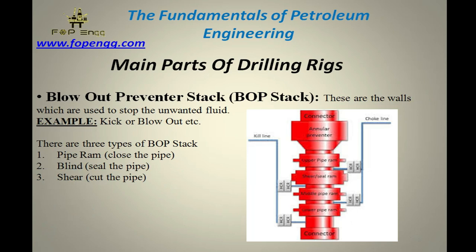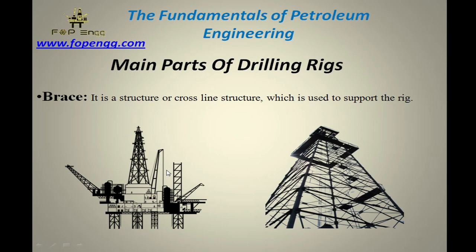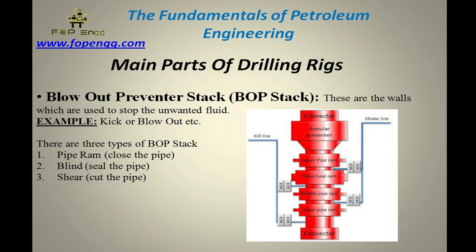Blowout preventer stack — these are the valves which are used to stop unwanted fluid. This is basically used to control the fluid. During drilling, we may observe a kick or blowout, so the BOP plays a role in controlling the fluid. There are three types of BOP: pipe ram, which is used to close the pipe; blind ram, which is used to blind the pipe; and shear ram, which is used to cut the pipe. I will discuss further in the next slide, as this is only an introduction.